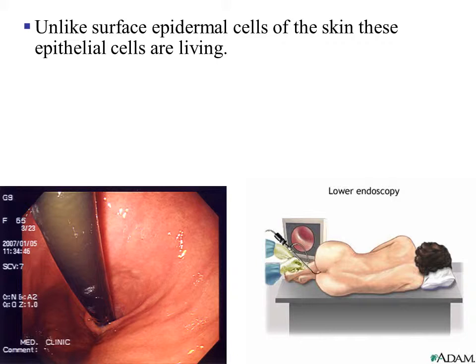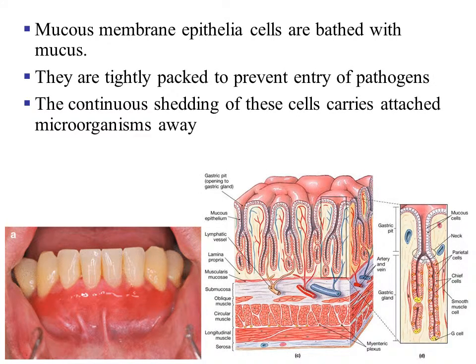Unlike the surface epithelial cells of the skin, the epithelial cells of the internal tissue layer are living. In the skin, cells get pushed outwardly, flatten, and die. These internal cells will not die — they remain living. They also produce mucus. The mucus membrane epithelial cells are bathed with mucus, are tightly packed to prevent entry of pathogens, and their continuous shedding of cells helps remove microorganisms away from areas like the lungs.